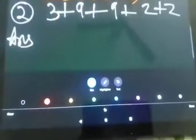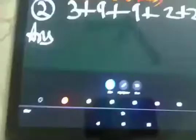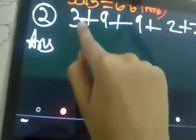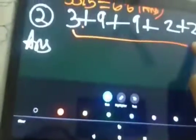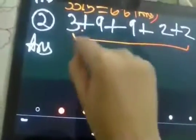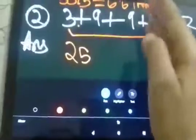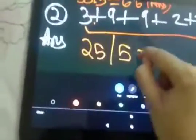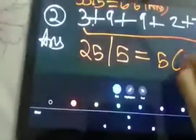Next question is 3 plus 9 plus 9 plus 2 plus 2. So the solution for this question would be, the sum of these all numbers would be 25. Then the total number of numbers is 5, so I am going to divide it by 5 which is 5. So 5 is the answer.